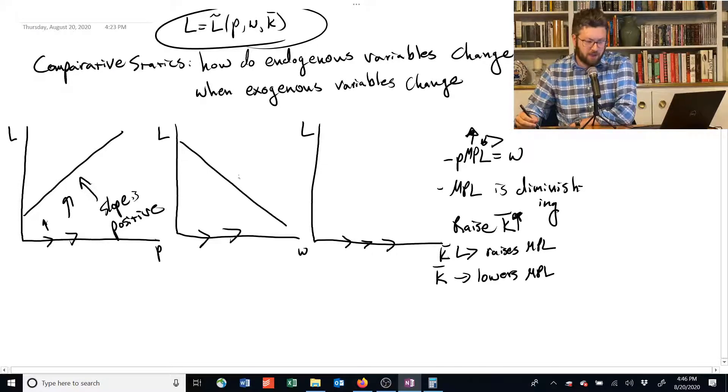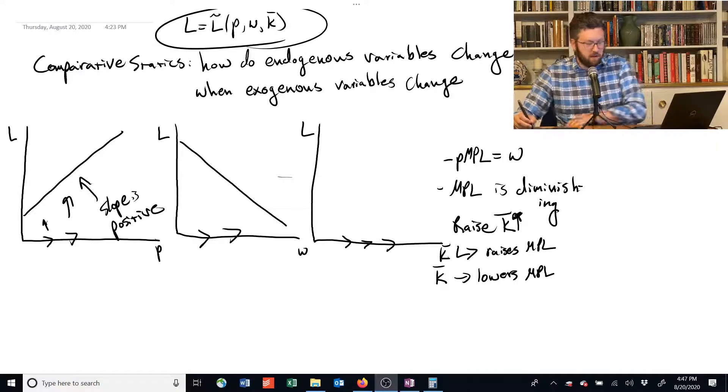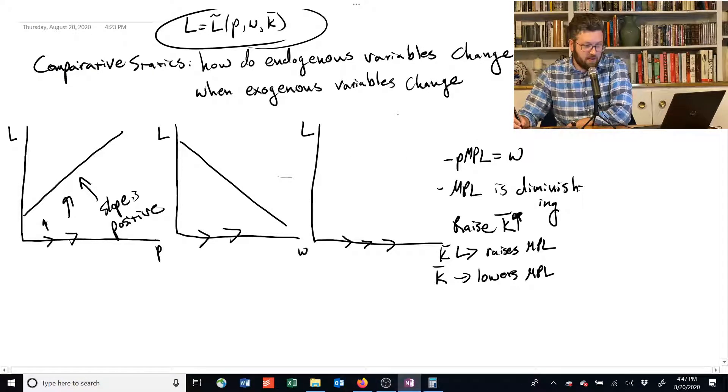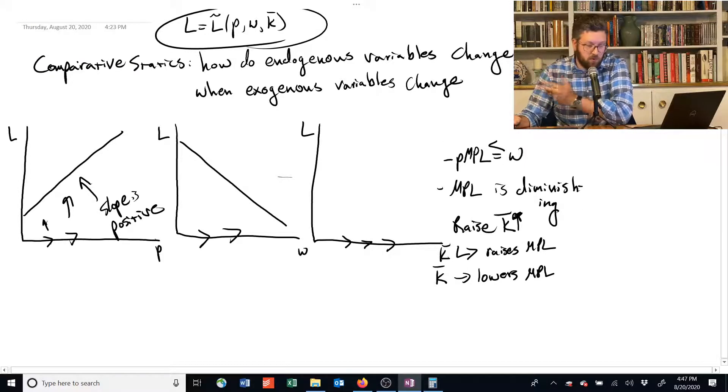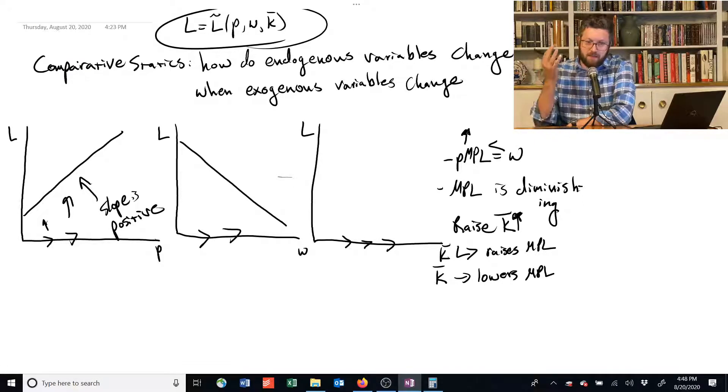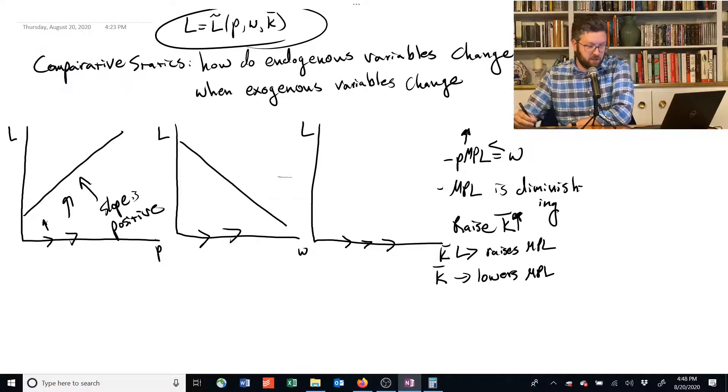If the marginal product of labor has gone down, that means that the left-hand side here is now less than the wage rate. It's gone down. It used to be equal. And that means that if this thing has gone down, we need to lay off some workers because they cost too much relative to their productivity. And as we lay them off, the marginal product of labor rises back up until these things are equal again.